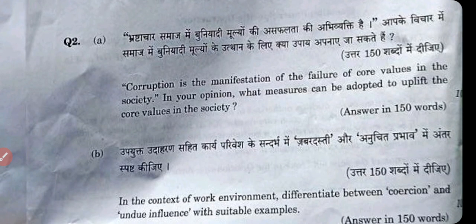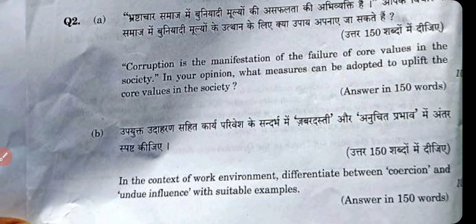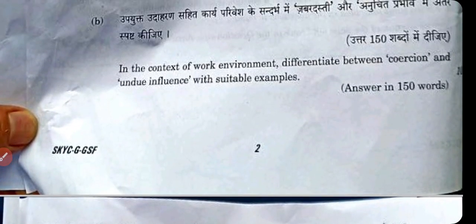Corruption is the manifestation of the failure of a core value in the society. In your opinion, what measures can be adapted to protect the core value in society? This is why our moral value of society matters. In the context of the work environment, differentiate between coercion and undue influence with suitable examples.